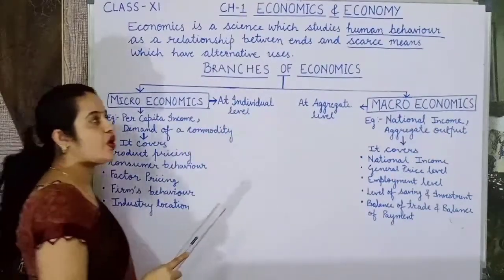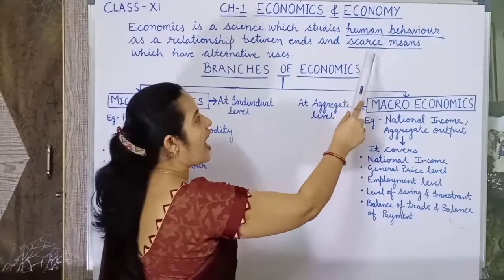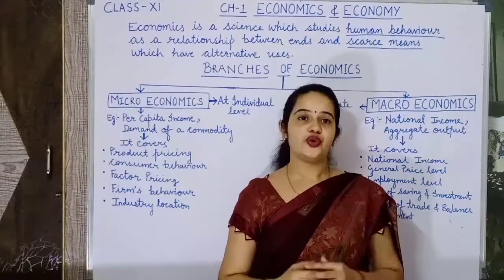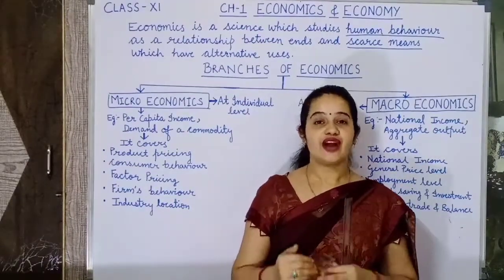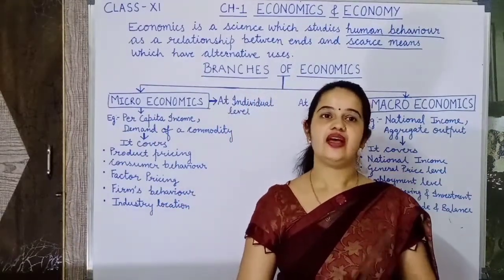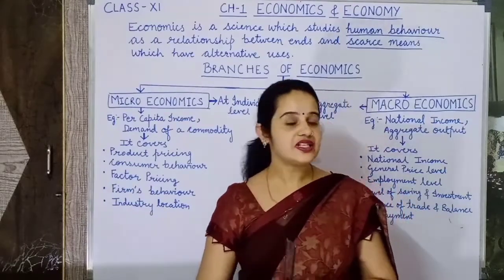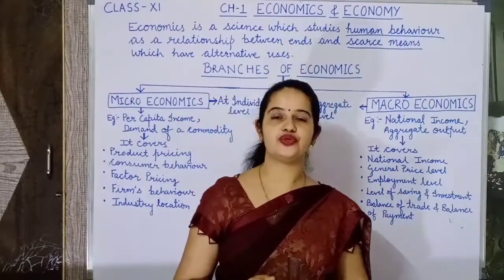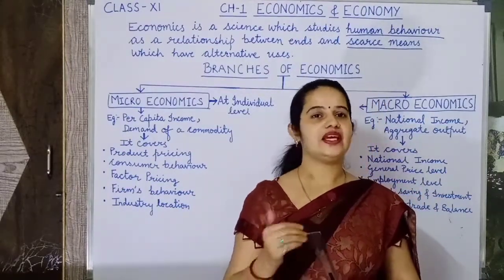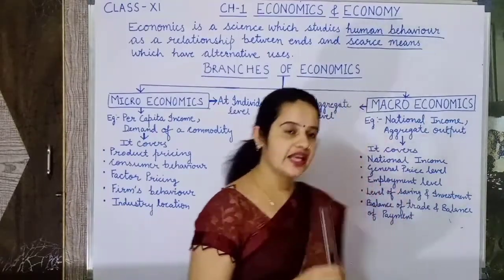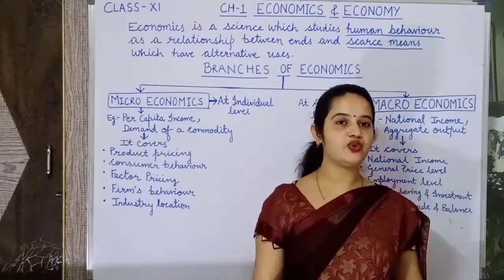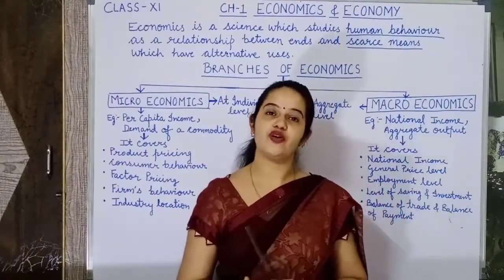Please focus on two underlying words here: human behavior and scarce means. Human behavior here means humans are supposed to be rational thinkers when studying economics. A rational thinker is a person who is able to use logical thoughts rather than emotional ones while making decisions. Secondly, the word 'scarce means with alternative uses' acts as a problem of making choices.